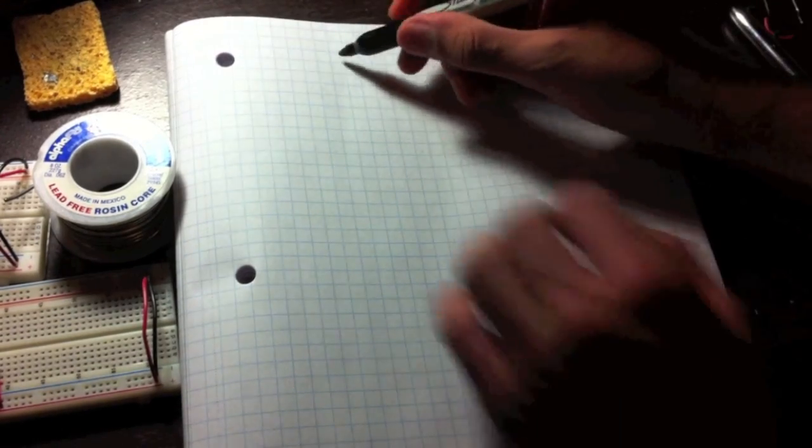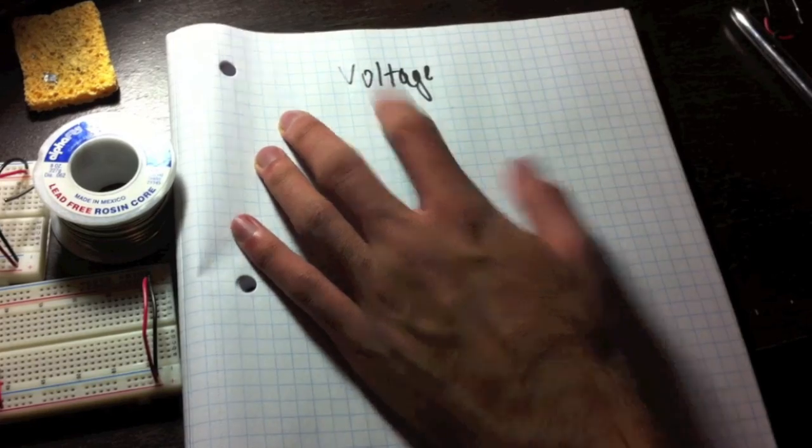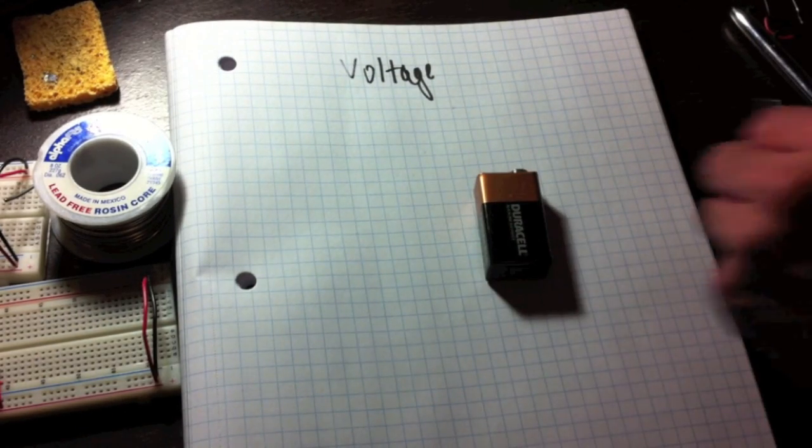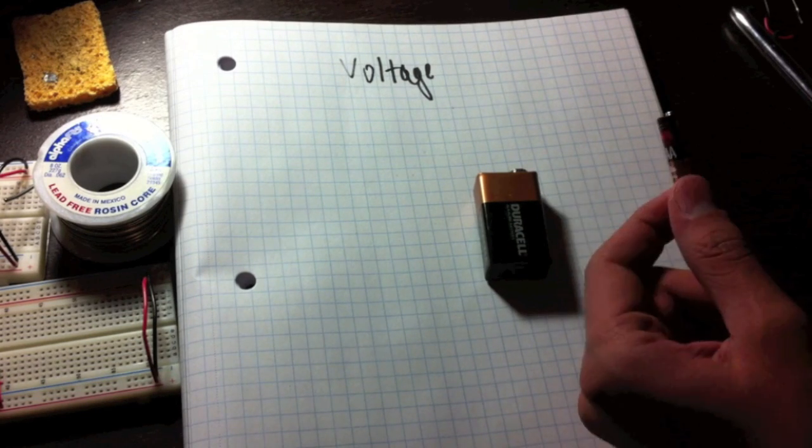So first, we're going to start with voltage. It's a word heard by pretty much anyone really. It's really common on the side of your batteries, such as this one or even these. For example, this one is 9 volts and this one is 1.5 volts because this is only a triple A.